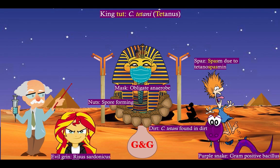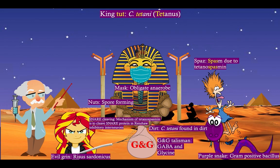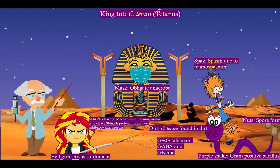And here comes an evil witch with an evil grin called Risus sardonicus. She sees the GABA and glycine on the SNARE protein and the witch snares it out — she cleaves the SNARE protein. Tetanospasmin cleaves the SNARE protein and thus inhibits the release of GABA and glycine at the Renshaw inhibitory interneurons. GABA and glycine cannot reach the alpha motor neurons, and the alpha motor neurons are now disinhibited, causing spasm and all the symptoms we see from tetanus. There it goes — it's been cleaved.